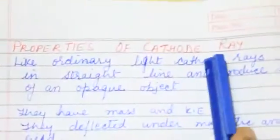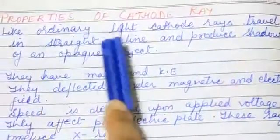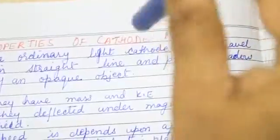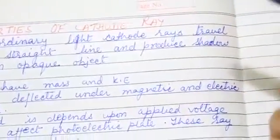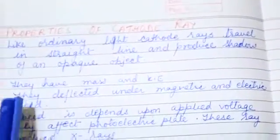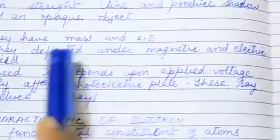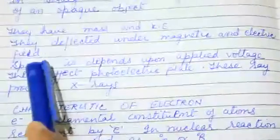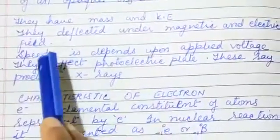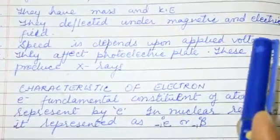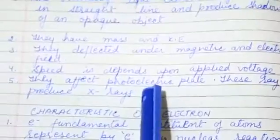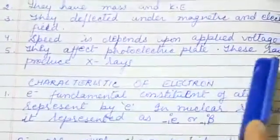The property of cathode rays are: like ordinary light, cathode rays travel in the straight line, produce shadow of an opaque object. See, the shadow of the pen is forming because light can't be passed through this notebook. They have mass and kinetic energy. They deflected under magnetic and electric field. Speed depends upon applied voltage. If the voltage is high, then the speed of molecule is high. And when the voltage is low, then the speed of molecule is low. They affect photoelectric plate. These rays produce x-rays.